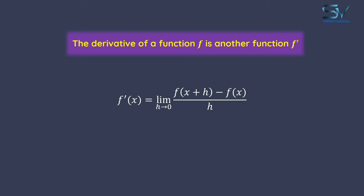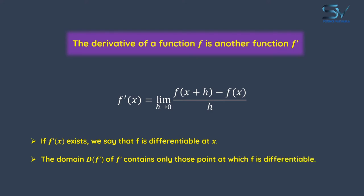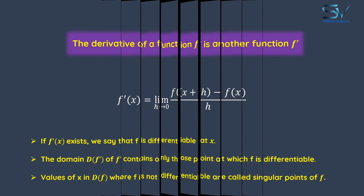Let's go over some key points about the derivative of function. If derivative of function exists, then it will mean that it is differentiable at x, or we can say it has a finite slope. The second point is, the domain of the derivative function, or f dash function, contains only those points at which function is differentiable. The third point is that values of x in the domain of function, where the function is not differentiable, are called singular points of function. Or we can say, if we don't obtain a finite slope at any point, we will refer to that point as a singular point.